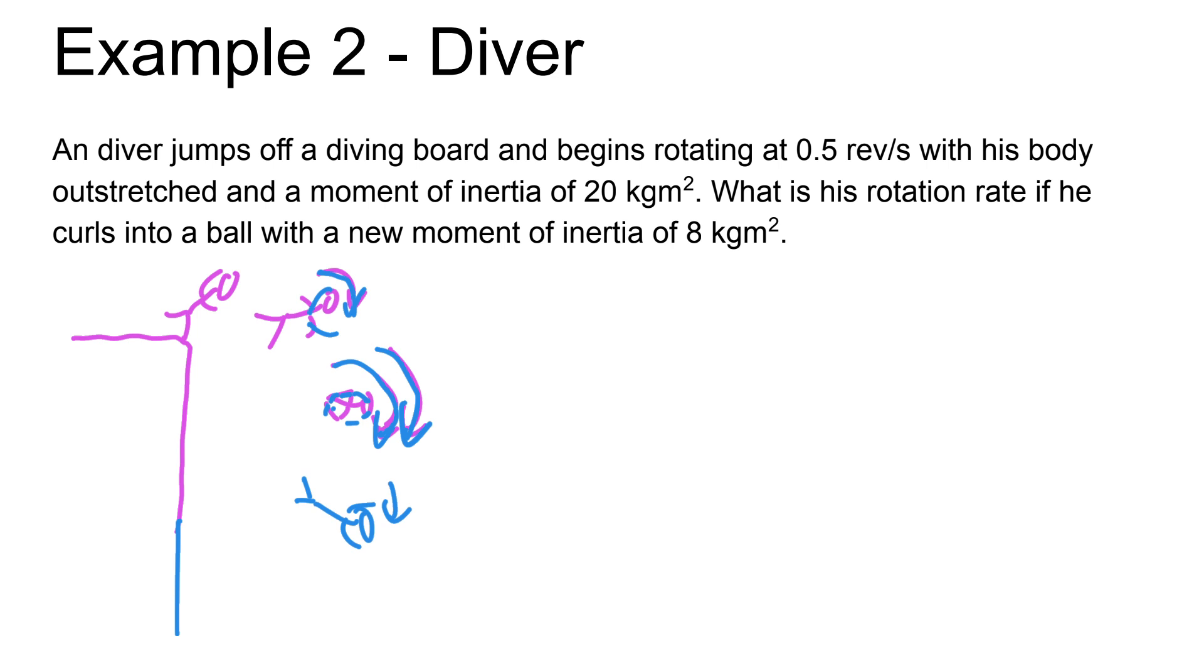I want to highlight a concept here. The reason why, when we tuck, the person is going to rotate faster is because angular momentum is conserved. Similarly to the last problem, when the diver tucks, I is going to go down and omega is going to go up. A common misconception about this problem is that he rotates faster because he has potential here, and as he drops he's losing potential and gaining kinetic.